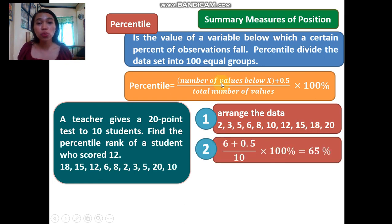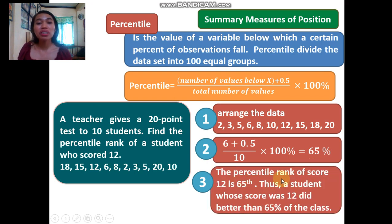The second step is to use the formula and substitute. The number of values below the score 12 is 6. So we have (6 + 0.5) divided by 10 times 100%, which equals 65%. The percentile rank of the score 12 is 65.